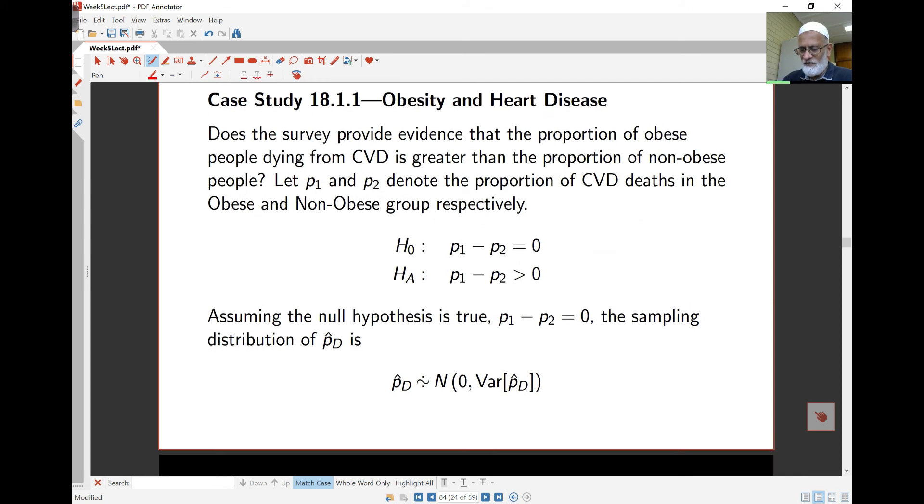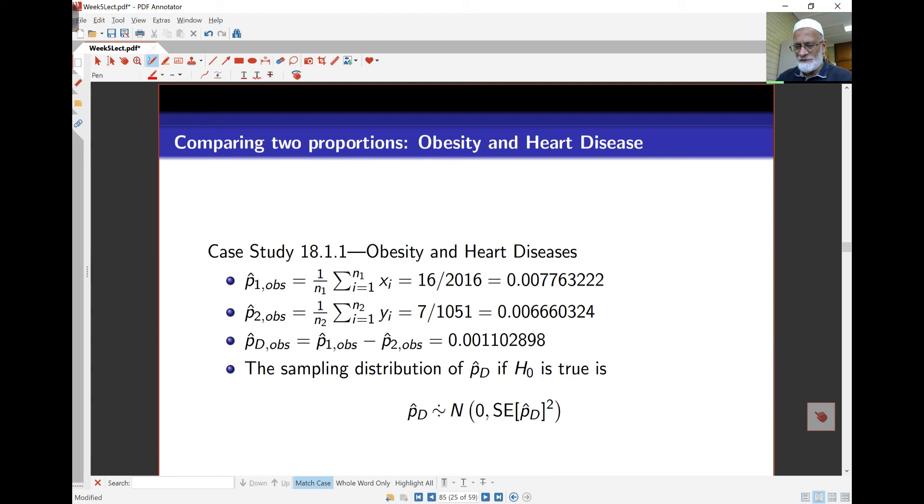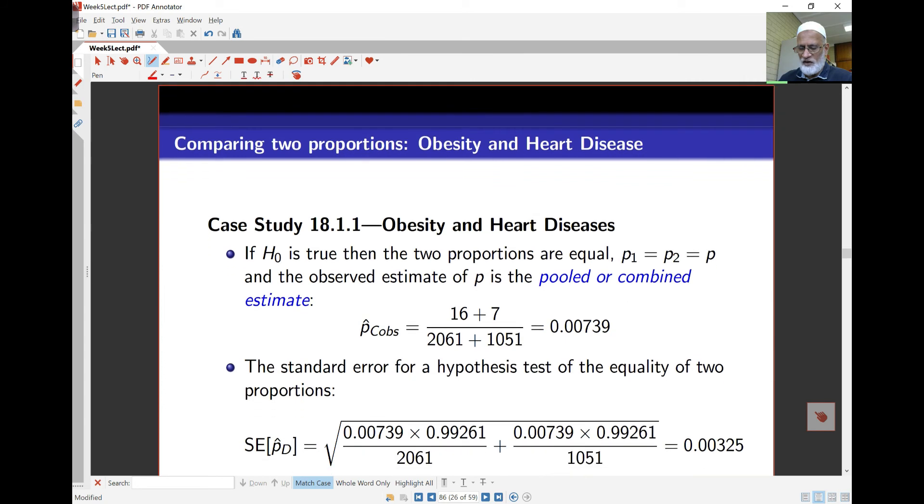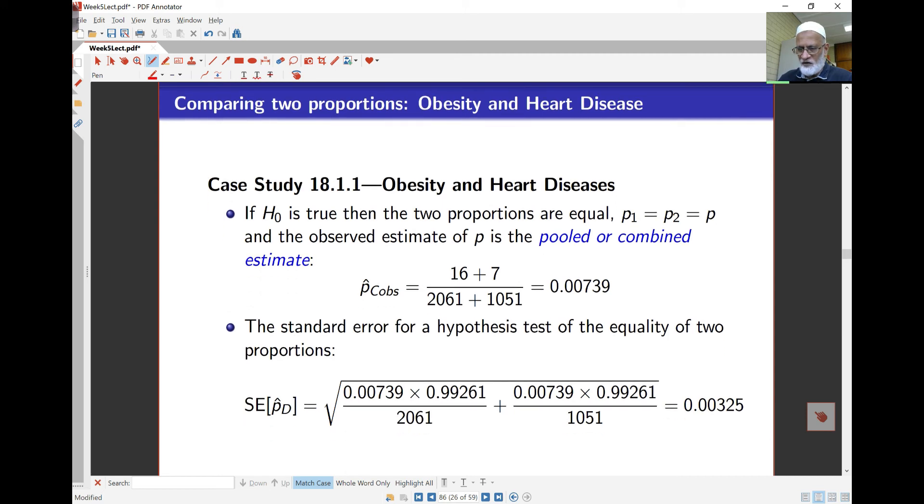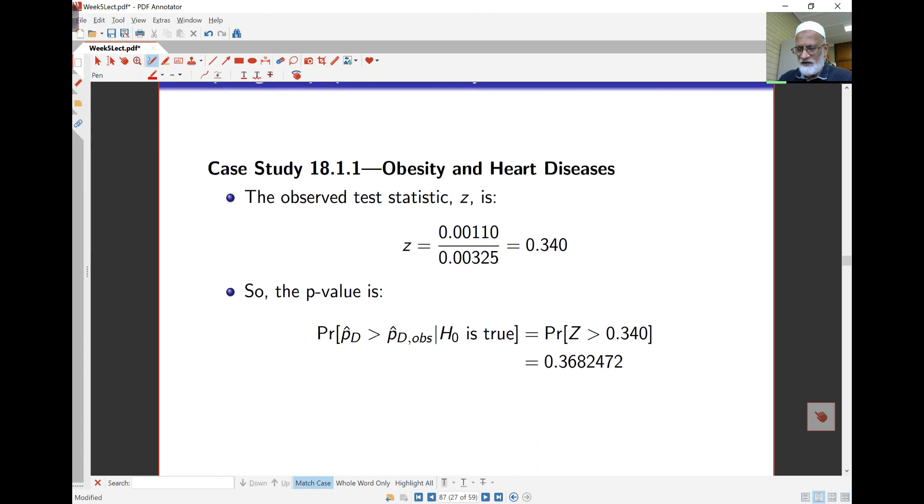Under the null hypothesis that P_D hat, the difference between proportions, is normal approximately with mean zero and variance given by the combined proportions. The estimates here of the combined proportion is the total number of deaths due to cardiac dysphaliasis over the total sample size. The Z statistic here is working out to be 0.340. The probability of the p-value here is 0.368. So this shows there is no difference. We fail to reject the null hypothesis and conclude there is no difference in cardiovascular related heart deaths for both the obese and non-obese groups.